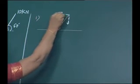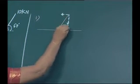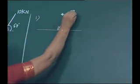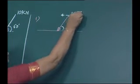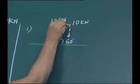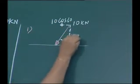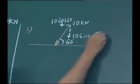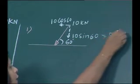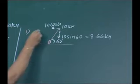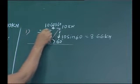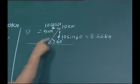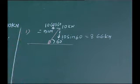The force is inclined at an angle of 60 degrees with respect to the x-axis. So our x-component or horizontal component will be 10 cos 60 and the vertical component will be 10 sin 60. So 10 sin 60 equals 8.66 kilo Newtons and 10 cos 60 equals 5 kilo Newtons. As the force is inclined, both components are also inclined.